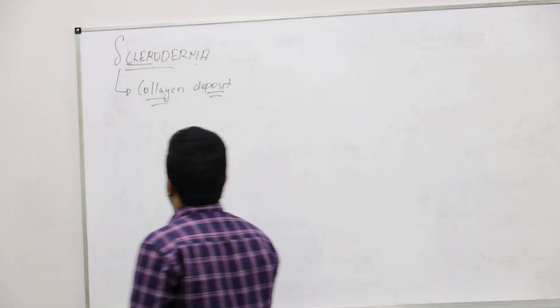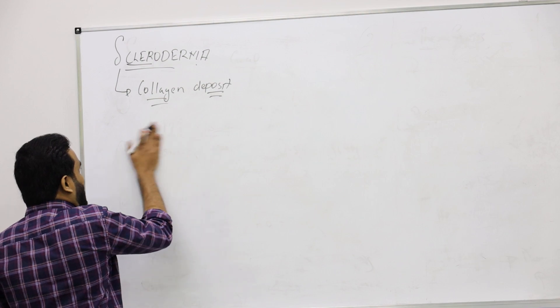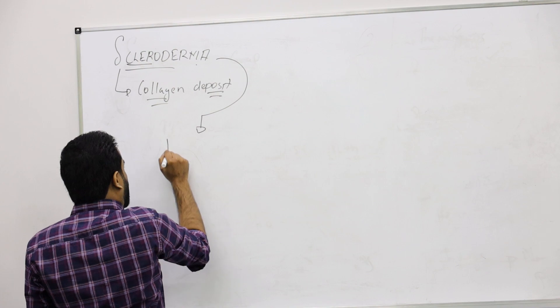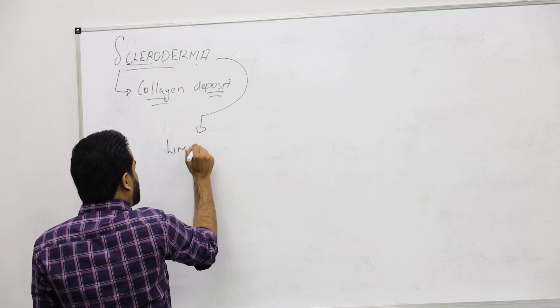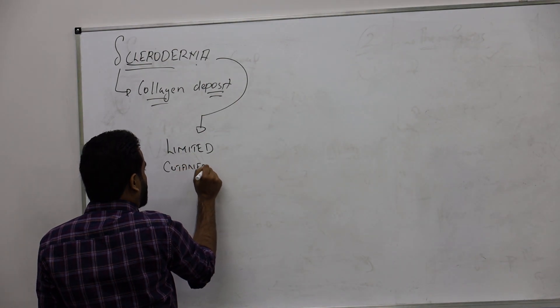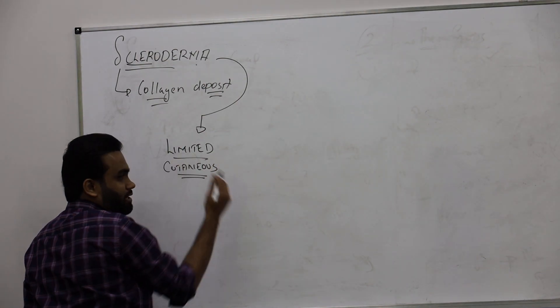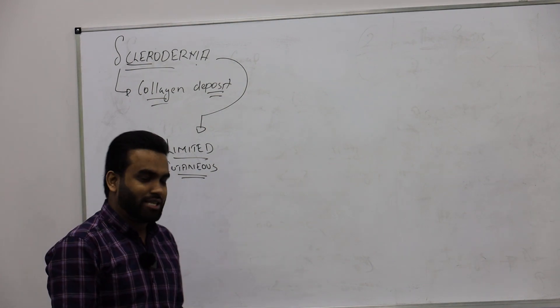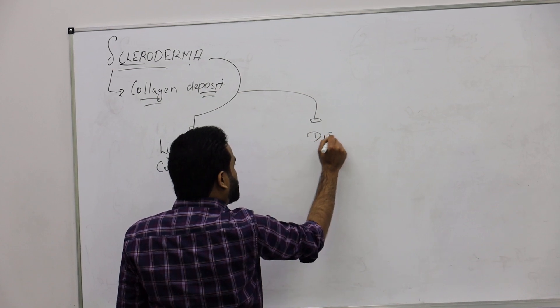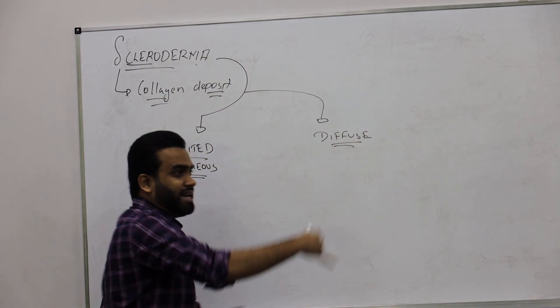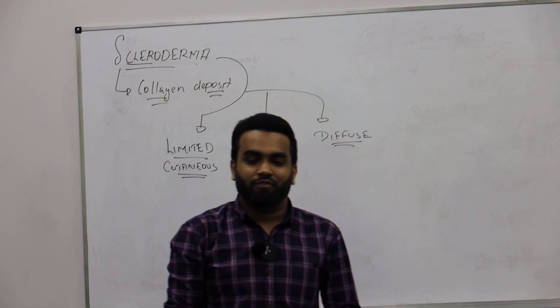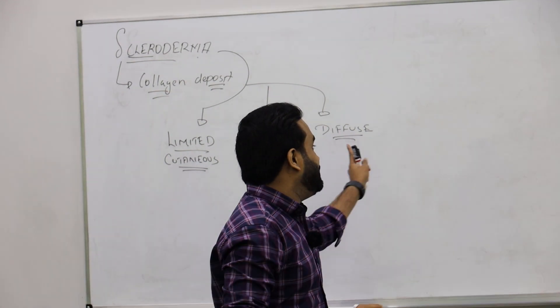We can clinically classify scleroderma into two types: limited cutaneous scleroderma where they are not spreading everywhere, and diffuse scleroderma where they are spreading everywhere. In simple terms, limited means internal or visceral organs are not affected, while in diffuse it will affect internal organs also.